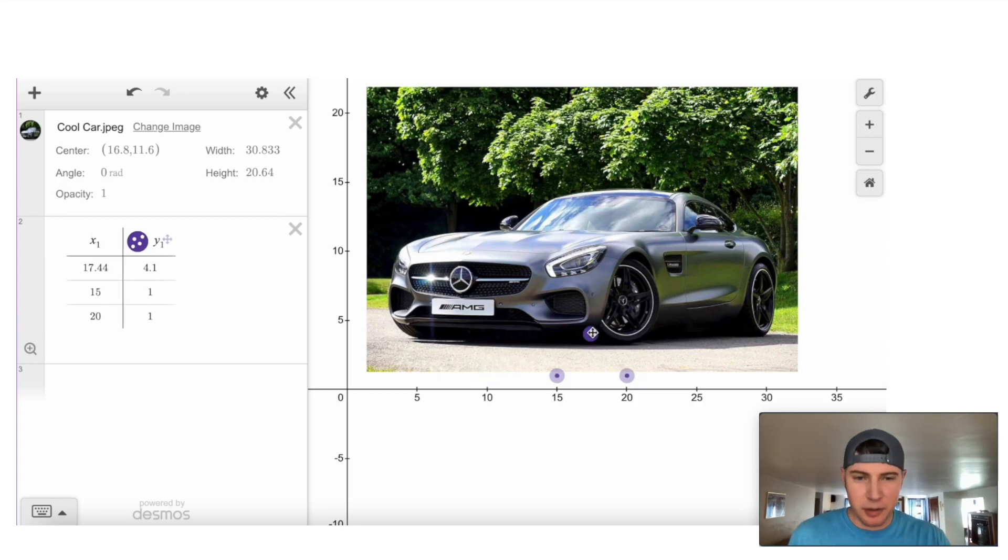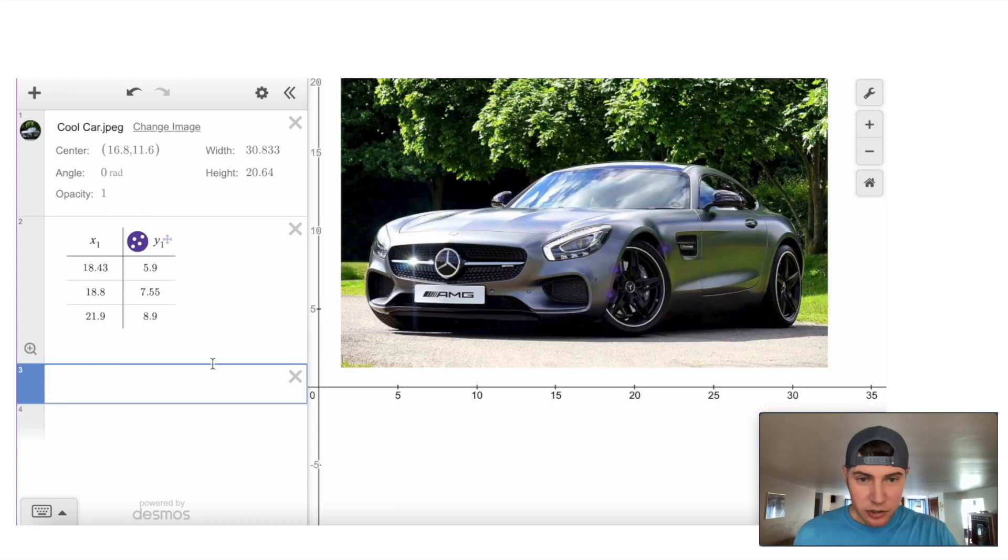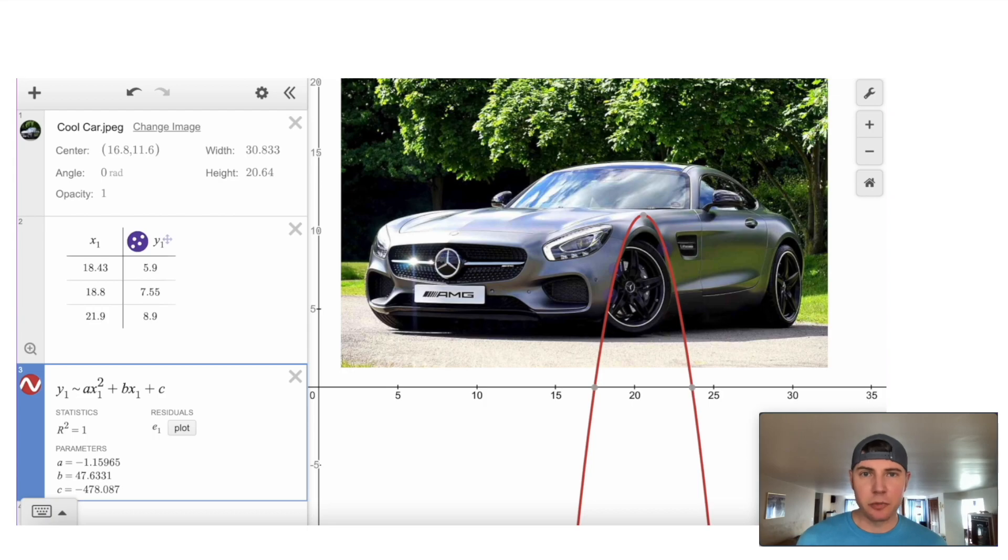And let's bring the points to something. Let's start on this wheel well. We'll move the points right here. And so we're trying to make this wheel well right here. So this looks like a parabola. So then in order to set up the regression, we're going to do y1 tilde ax1 squared plus bx1 plus c.